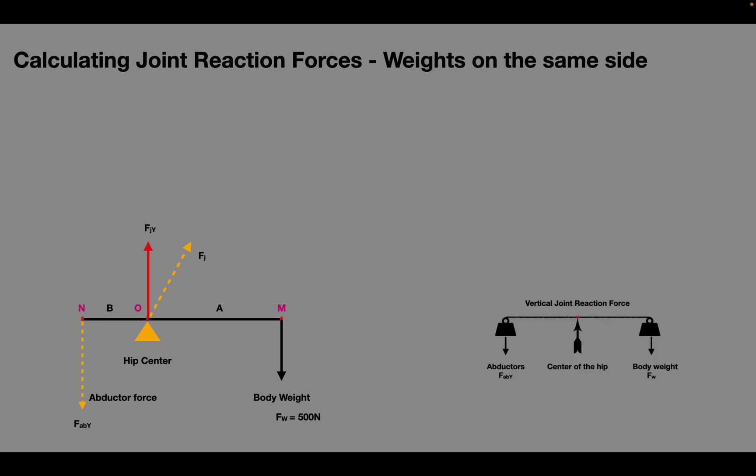Let's now see what happens if the weights are held on the same side as that of the hip. The moment produced by the body weight is opposed by the combined effects of the moment due to abductors and the hand held weights. So, the given data is force due to the body weight is 500 N,